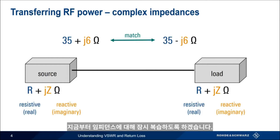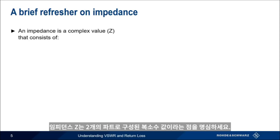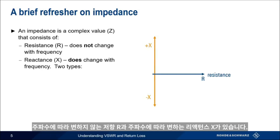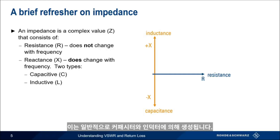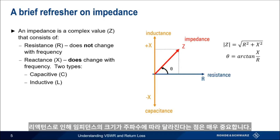At this point, it might be a good idea to pause for a brief refresher on impedance. Remember that an impedance Z is a complex value that consists of two parts: a resistance R, which does not change with frequency, and a reactance X, which does change with frequency. Reactance can be further divided into capacitive and inductive reactance, which are usually created by capacitors and inductors. Our complex impedance has both a magnitude and a direction, and it's very important to remember that because of reactance, total impedance varies by frequency.